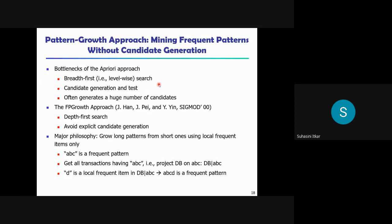The fourth bottleneck of Apriori was multiple database scans. So these were the four bottlenecks of the Apriori algorithm. All those bottlenecks were considered in the FP Growth approach, and they tried to overcome all the limitations of Apriori. Instead of breadth-first search, they used depth-first search.